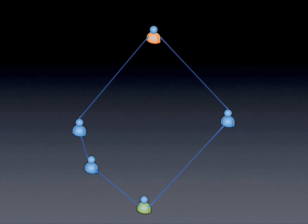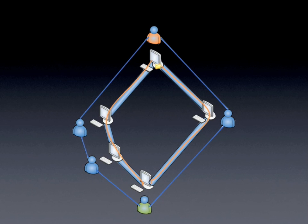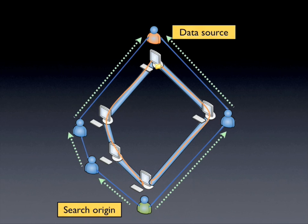This image shows a group of users and the friend relationships among them. OneSwarm maintains network connections between friends' computers. To locate data, OneSwarm searches among directly connected friends, who in turn forward searches to their friends, and so on, until a data source is located. Data is forwarded along the reverse path of friend connections.